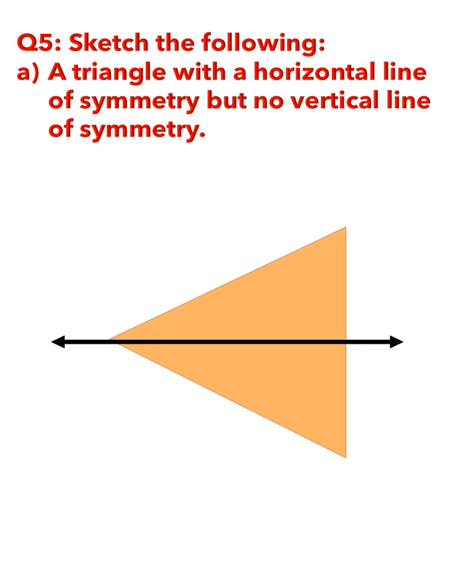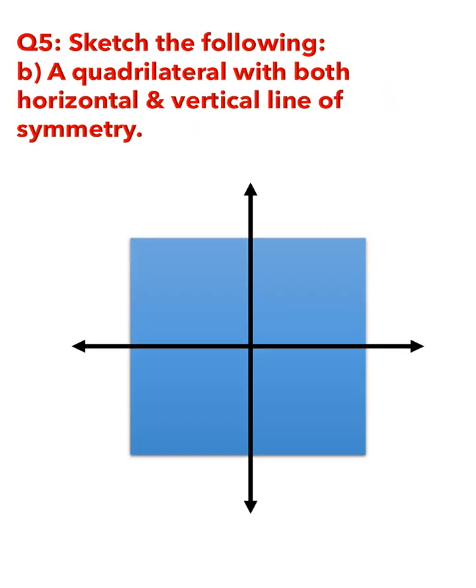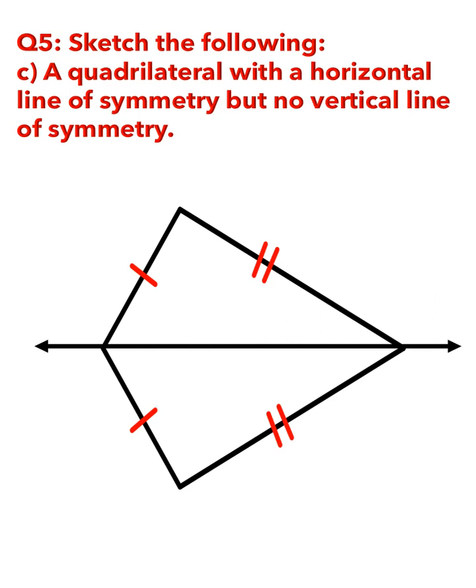Next, you have to sketch the following. Question part A is a triangle with a horizontal line of symmetry but no vertical line of symmetry, and it will be drawn like this. Part B is a quadrilateral with both horizontal and vertical lines of symmetry — this is a square or you can take a rectangle. Part C is a quadrilateral with a horizontal line of symmetry but no vertical line of symmetry — this is a kite. If you want to know about a kite in detail, go through the video on kinds of quadrilaterals on our channel.